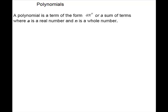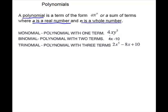Polynomials. A polynomial is a term of the form ax to the n, or a sum of terms, where a is a real number — so your numerical coefficient is a real number — and n is a whole number. Remember that your whole numbers start with 0 and go up: 0, 1, 2, 3, 4, 5. So you don't have fractions, you don't have negative exponents.